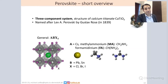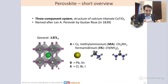Perovskites are like a three-component system. They adhere to the same structure as calcium titanate — there's a picture of it here. It was named after Lev Perovsky and discovered by Gustav Rose in 1839. Perovsky is a Russian name, and hence the name — if it sounds Russian to you, that's because it is. Perovskites are named after this Russian person.